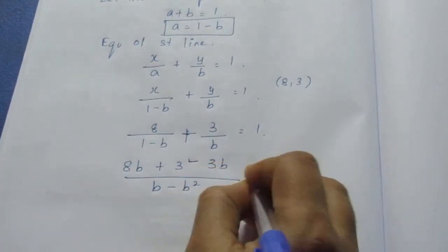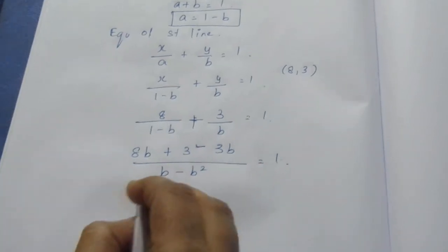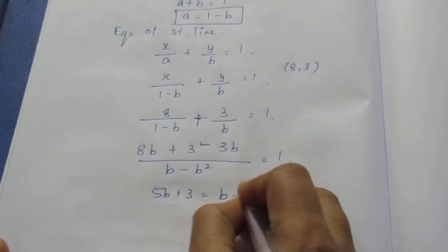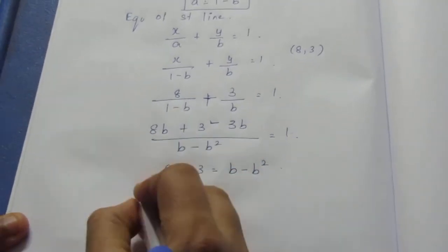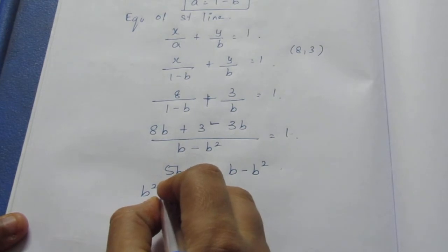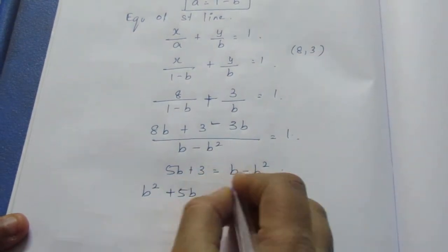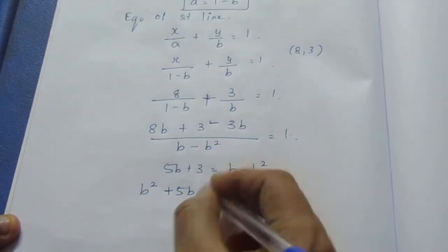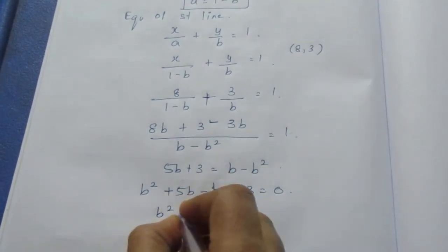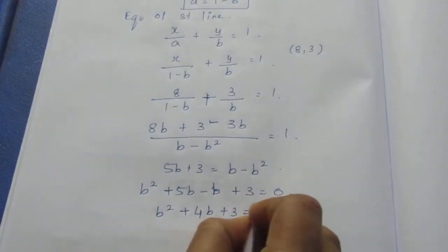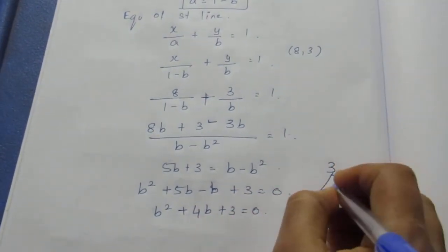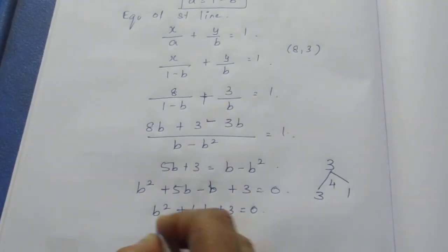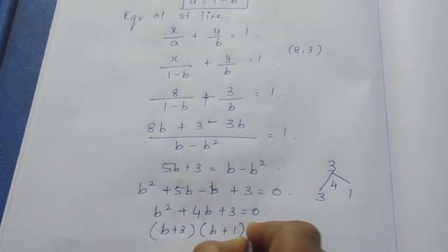Simplifying, we get b minus b squared equal to 1. Collecting like terms: 5b plus 3 equal to b minus b squared. Moving all terms to one side gives b squared plus 5b minus b plus 3 equal to 0, which simplifies to b squared plus 4b plus 3 equal to 0. Factorising, we get (b plus 3) into (b plus 1) equal to 0.